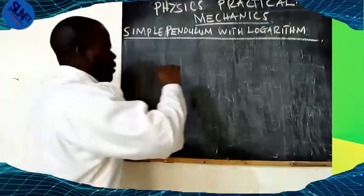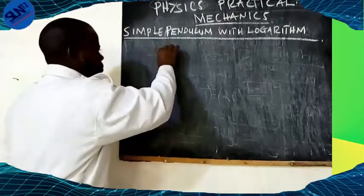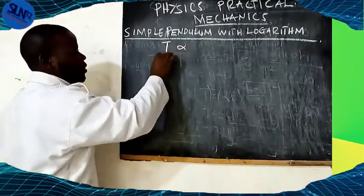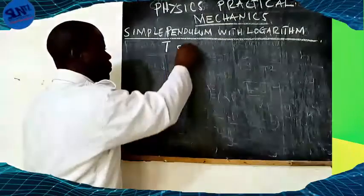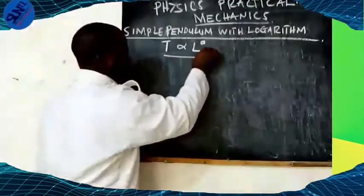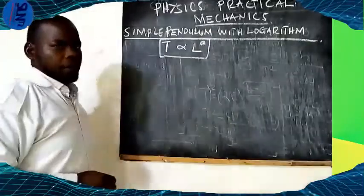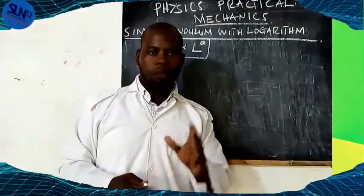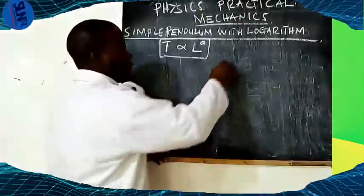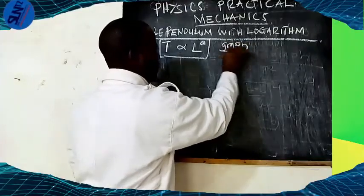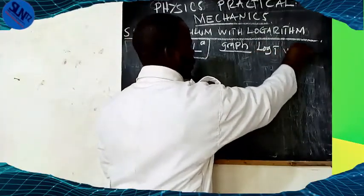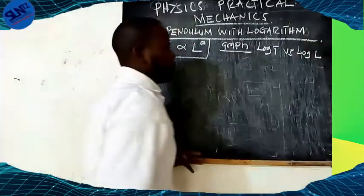Our experiment question states that the periodic time T is directly proportional to the length L. You can read this during your simple pendulum experiment. In the graph, you are required to plot log T against log L.